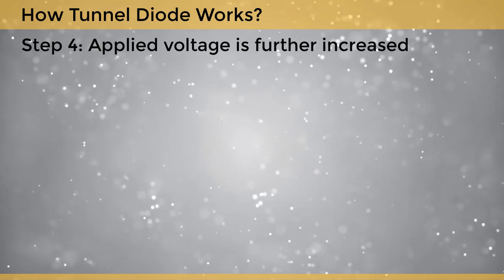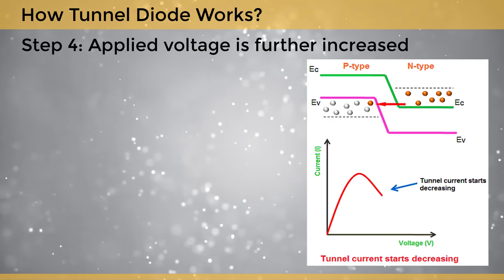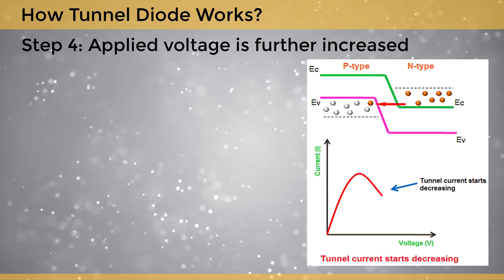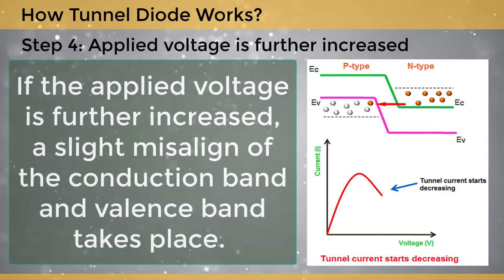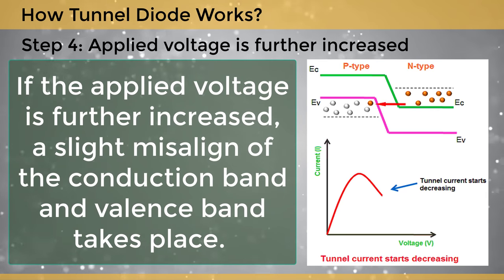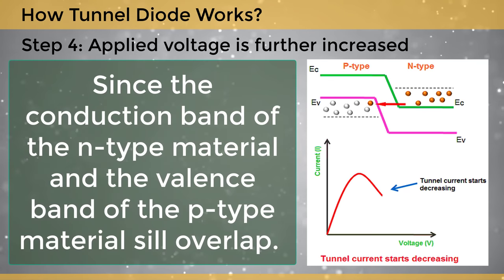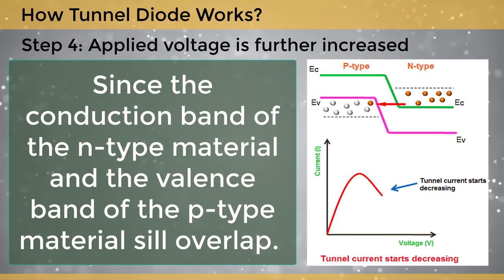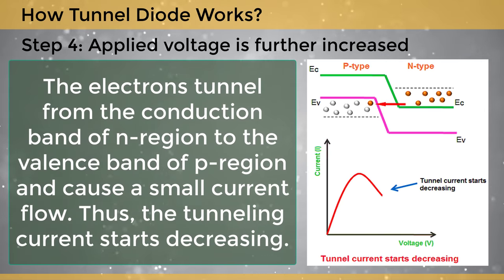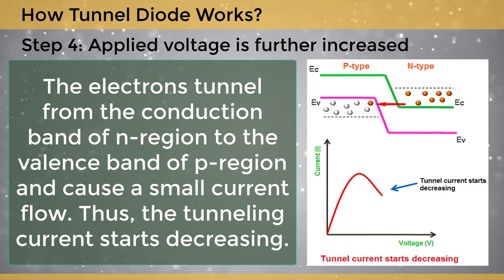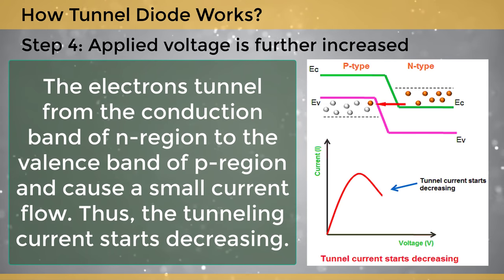Step 4: Applied voltage is further increased. If the applied voltage is further increased, a slight misalignment of the conduction band and valence band takes place. Since the conduction band of the n-type material and the valence band of the p-type material still overlap, electrons tunnel from the conduction band of the n-region to the valence band of the p-region and cause a small current flow. Thus, the tunneling current starts decreasing.